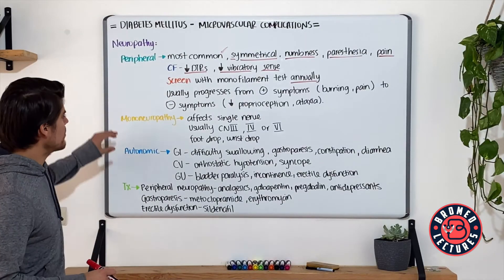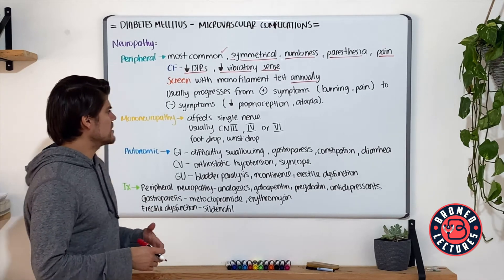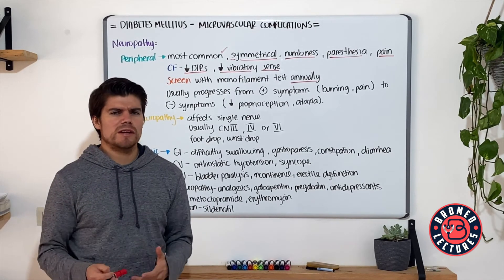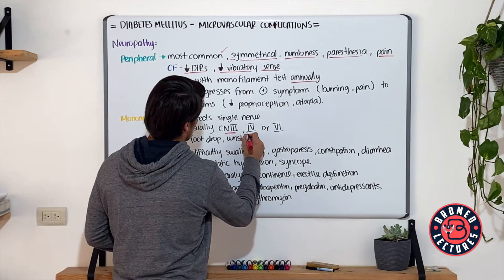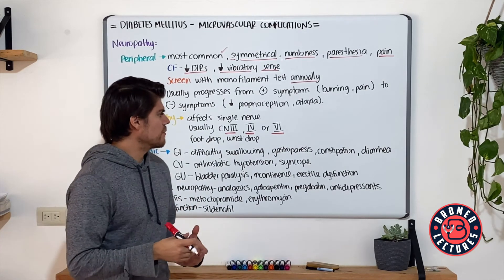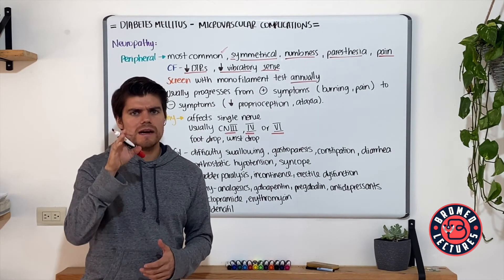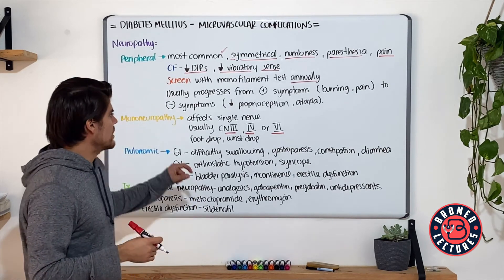With mononeuropathy, this is a single nerve affection, and it usually presents with involvement of the cranial nerves. The most common ones are the third, fourth, and sixth. The patients present with ophthalmoplegia and different eye misalignments depending on the muscles innervated by these cranial nerves.